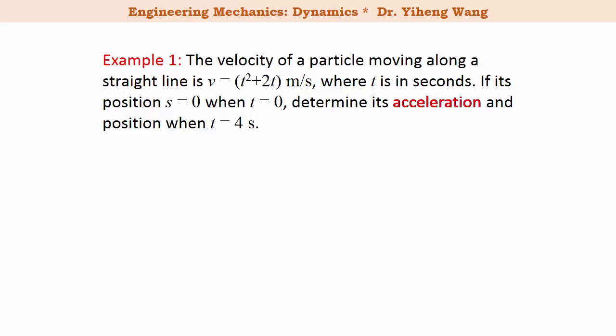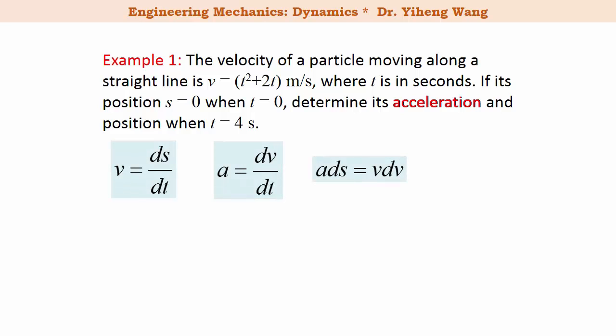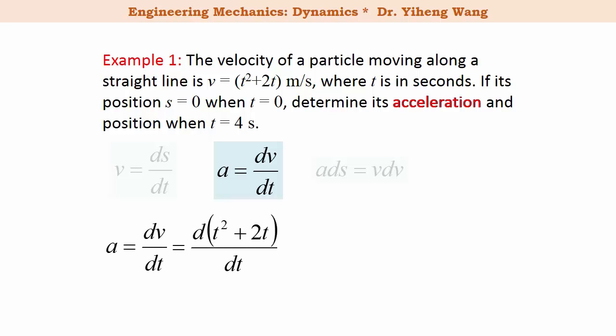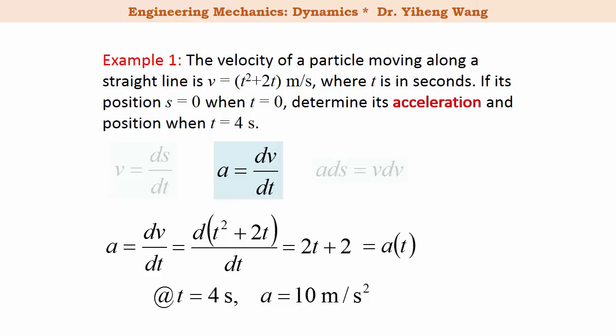We have three basic kinematic equations to choose from. Our given information is that velocity is given as a function of time, and we need to find acceleration — so we have v, t, and a — and naturally we want to use the second equation, since it has all the variables of interest. We substitute v with the time function, perform the differentiation, and get a equals 2t plus 2. At t equals 4 seconds, acceleration evaluates to 10 meters per second squared.